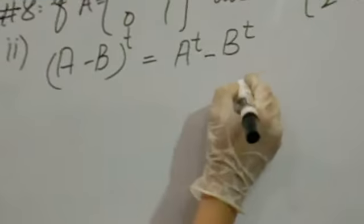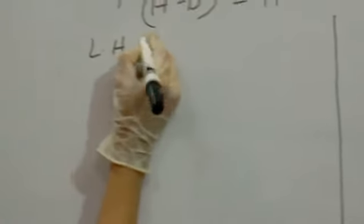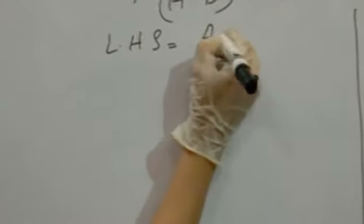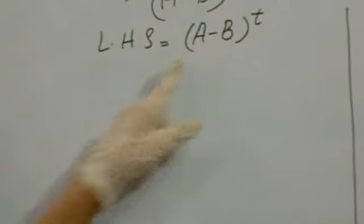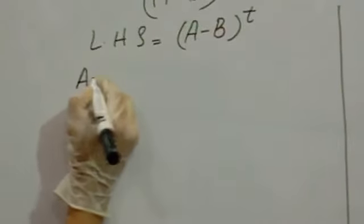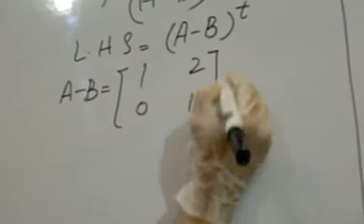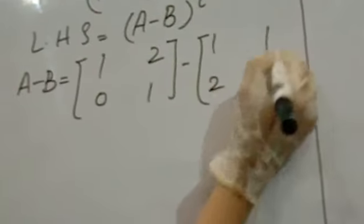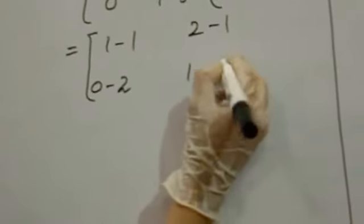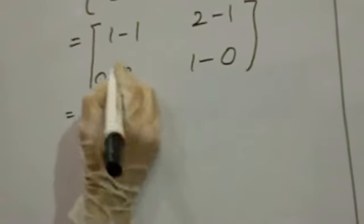Okay, we have left hand side equals to A minus B transpose. First we will subtract B from A, we will find A minus B.